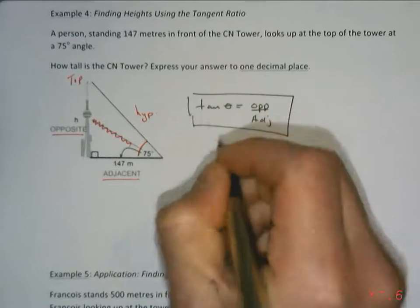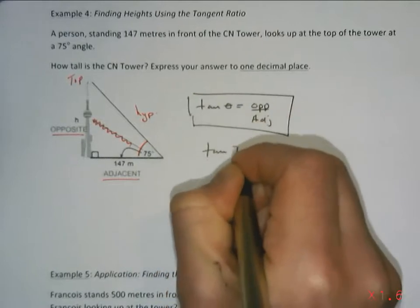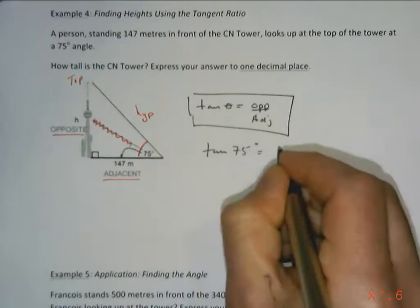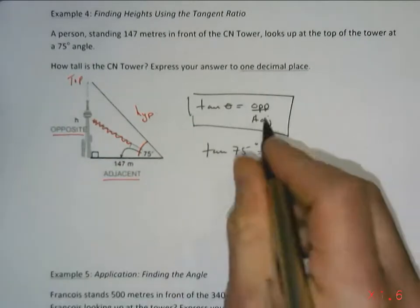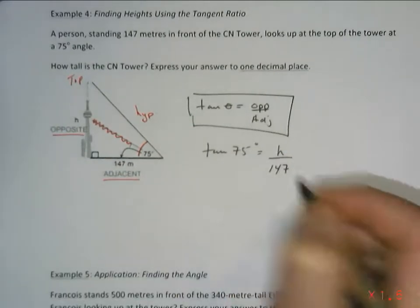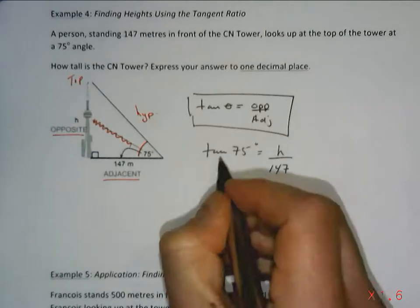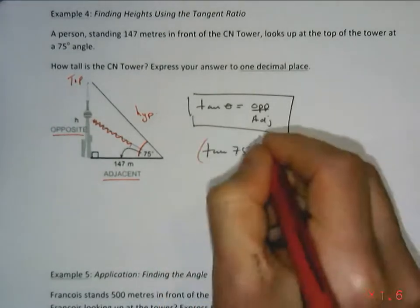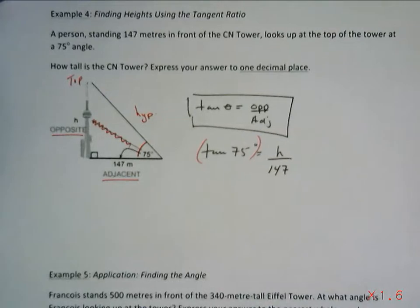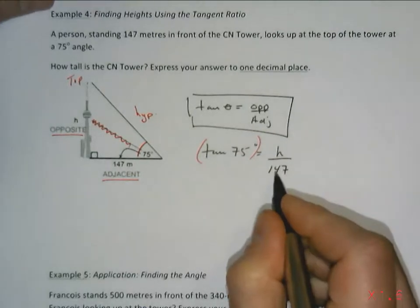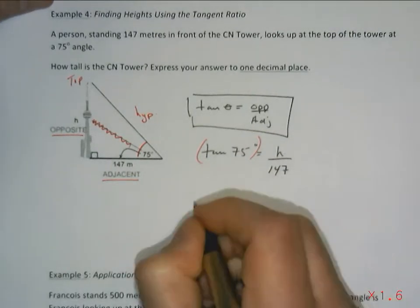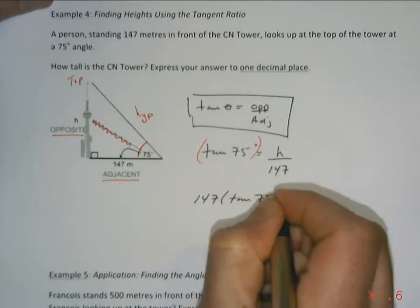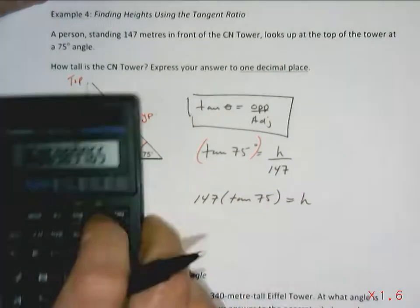So in this case, we have tan 75° equals H over 147. I'm going to use H because they use H. My adjacent is 147 meters away. So again, this is a decimal number, I'm going to treat it like a number. It's not a big deal. So I'm going to multiply both sides by 147 to isolate H using your calculator.